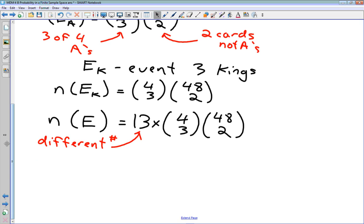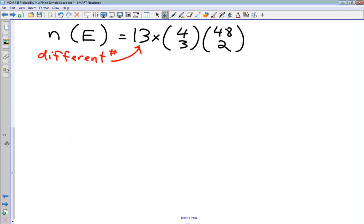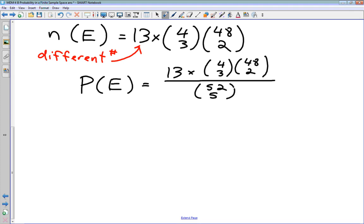Well, now we can calculate our probability. Our probability of event E is going to be this thirteen times four choose three, 48 choose two, divided by 52 choose five, which was the number of things in our sample space.